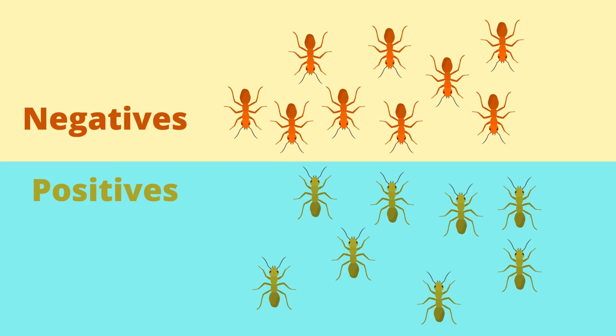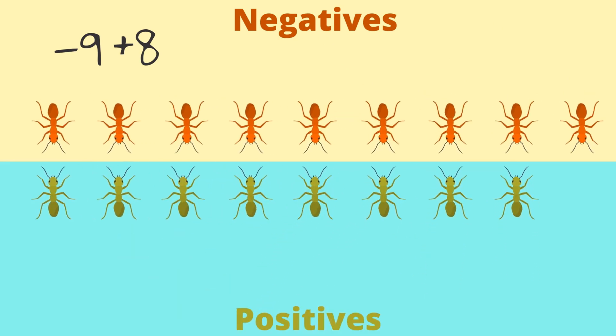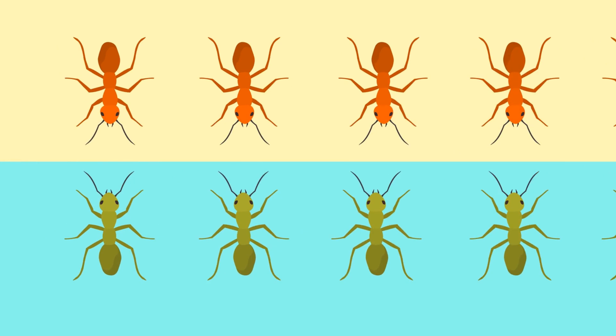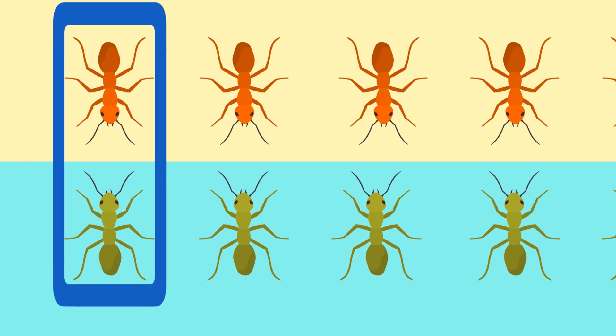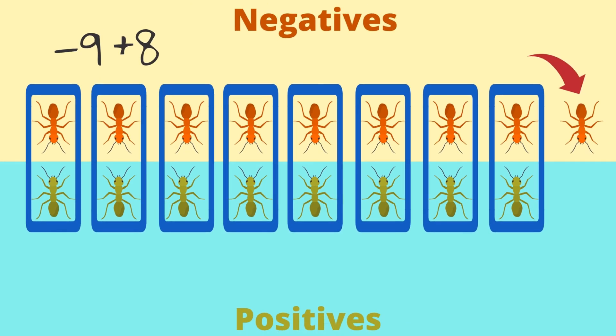For example, if we're adding negative 9 plus 8, that would be the same as 9 red ants and 8 yellow ants engaging in a fight. If each yellow ant is locked in battle with a red ant, what would we have left? We would have one red ant left,